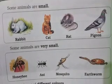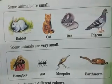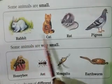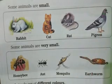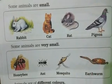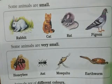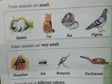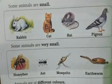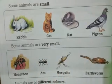Now you can see on the next page, some animals are small like rabbit, cat, rat and pigeon. They are small in size. Then elephant, giraffe, hippopotamus, whale — they are big in size. Some animals are very small.